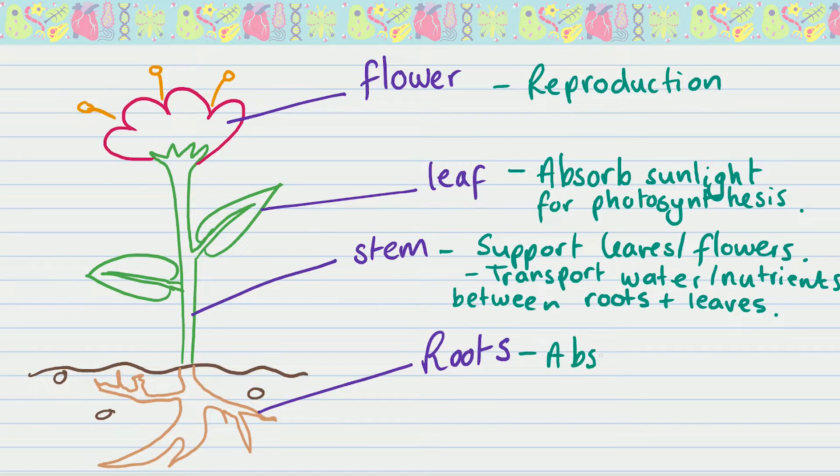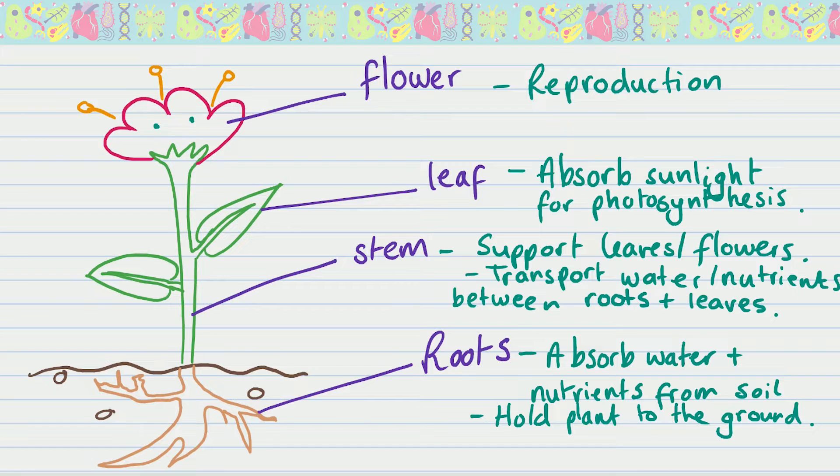Lastly we've got the roots. They are there to absorb water and nutrients from the soil. That water is needed for photosynthesis and those nutrients are for growth. The plant is also anchored by them, so it's their way of gripping onto the earth so they don't get washed away by water or blown away by the wind.